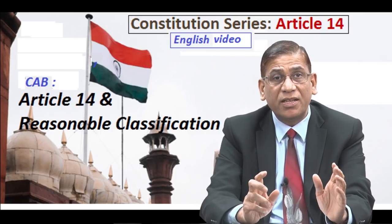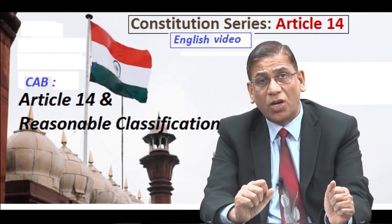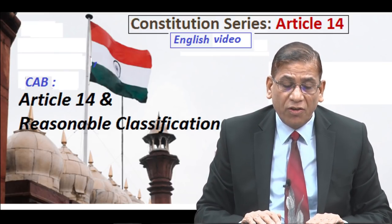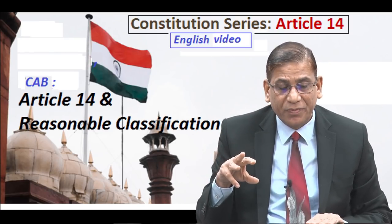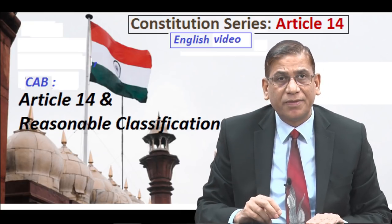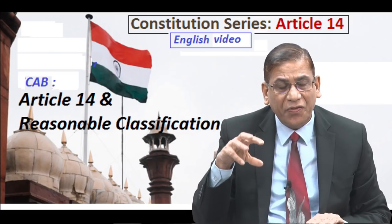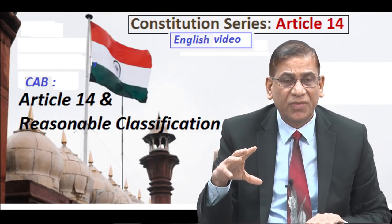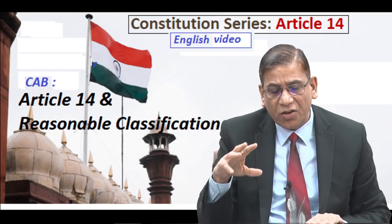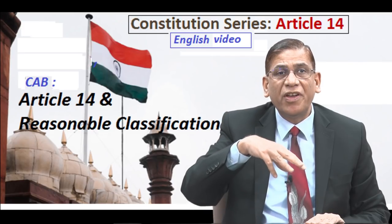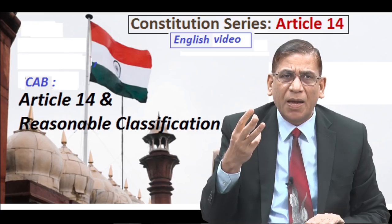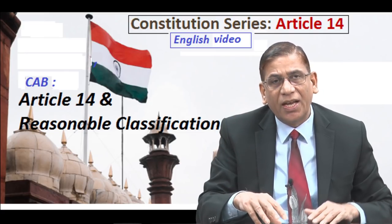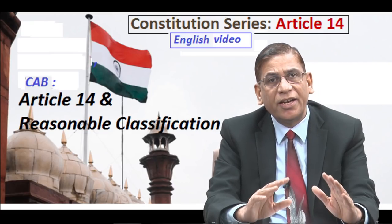Article 14 even permits a law for one individual if that individual constitutes a class in himself. But the validity of any law is to be judged by assessing its overall effect, not by picking exceptional cases. The court must assess whether, after taking all aspects into consideration, the classification is just — this was held in Muhammad Usman versus State of Andhra Pradesh, a 1971 Supreme Court judgment. When you look at the entire aspect of CAB, it is clear that it says no to people who follow a certain religion, which is a palpable kind of arbitrariness.